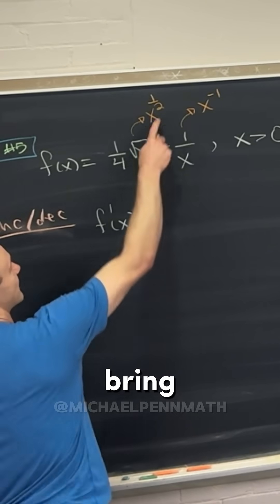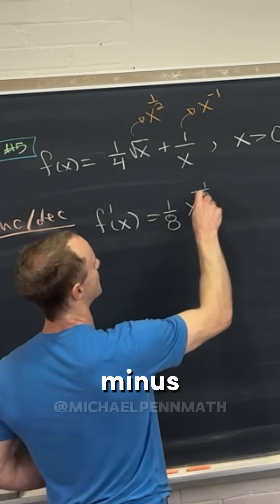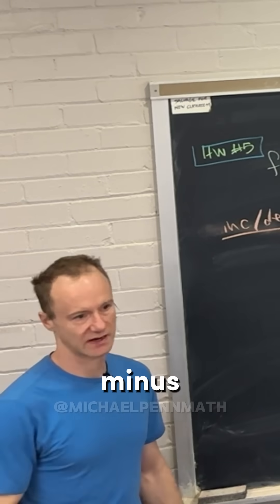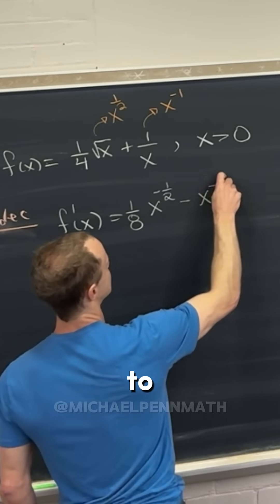So let's see, if we bring the half down that's going to turn that into an eighth, and then we're going to have x to the minus half. Half minus one is minus half, and then we're going to bring the minus one down and we'll have x to the minus two.